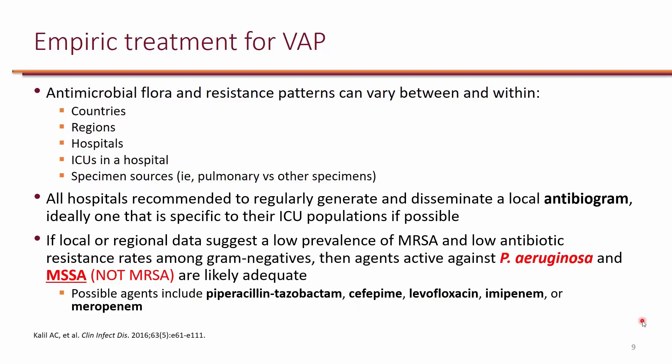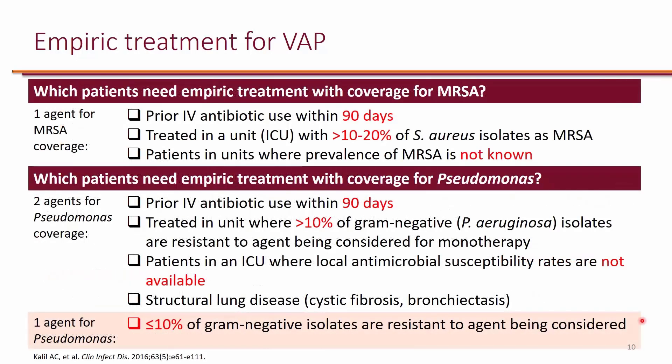Who exactly needs to receive empiric coverage for MRSA? Generally speaking, both MRSA and Pseudomonas are organisms that originate from healthcare settings. Patients who have received prior IV antibiotics in the past three months (90 days) need to receive one agent with MRSA coverage — typically vancomycin. Also, patients with VAP being treated in ICUs where the prevalence of MRSA is more than 10 to 20 percent, or where MRSA prevalence is unknown, need one agent active against MRSA.